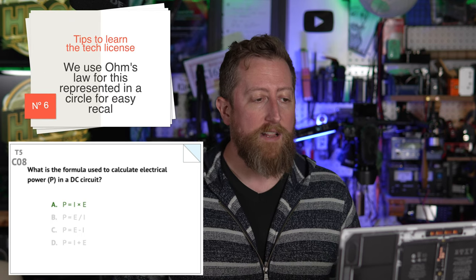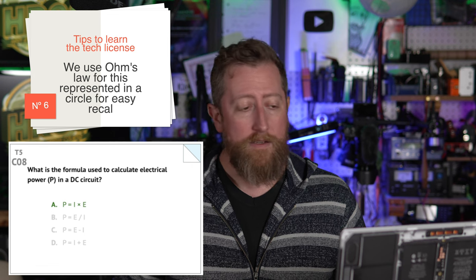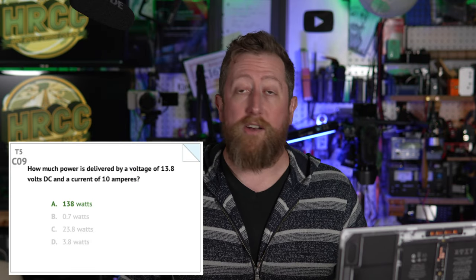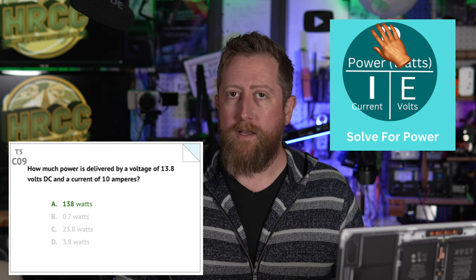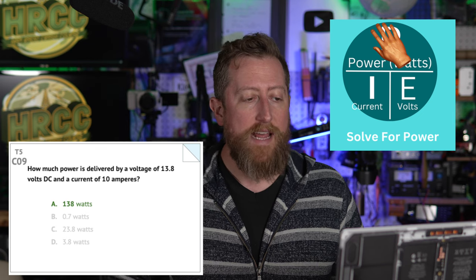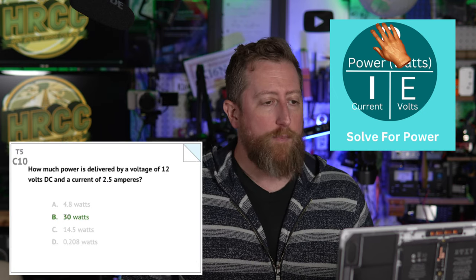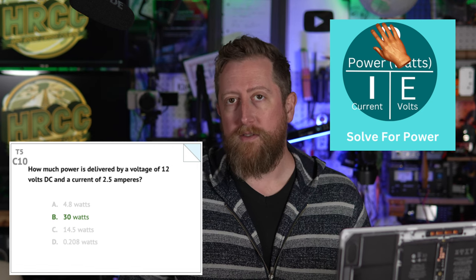Charlie 08: what is the formula used to calculate electrical power, represented as P, in a DC circuit? And it is P equals I times E. Charlie 09: how much power is delivered by a voltage of 13.8 volts DC and a current of 10 amperes? 13.8 is what we most often use in ham radio. The answer is 138 watts, which you get by applying that previous equation. Charlie 10: how much power is delivered by a voltage of 12 volts DC and a current of 2.5 amps? The answer here is 30 — solved by multiplying 12 by 2.5.